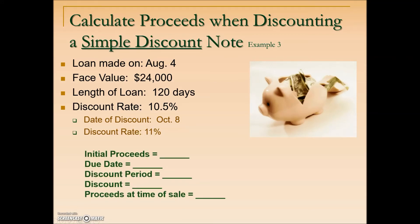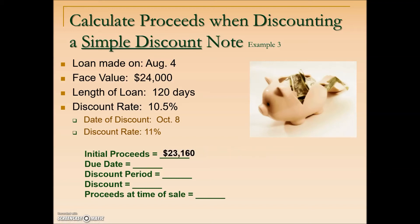To determine the initial proceeds of this note — separate from the eventual selling — we take the face value times the originally stated discount rate times the time in terms of a year to get the bank discount. We then subtract that from the face value or maturity value. Whoever received this money would have use of $23,160.